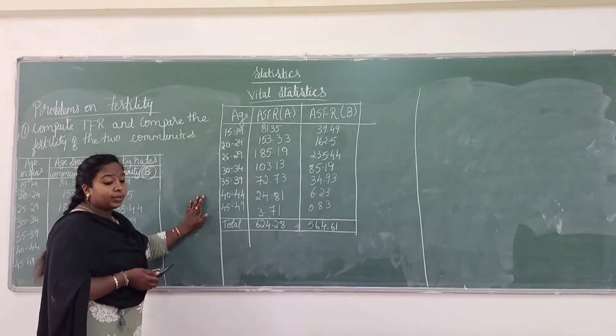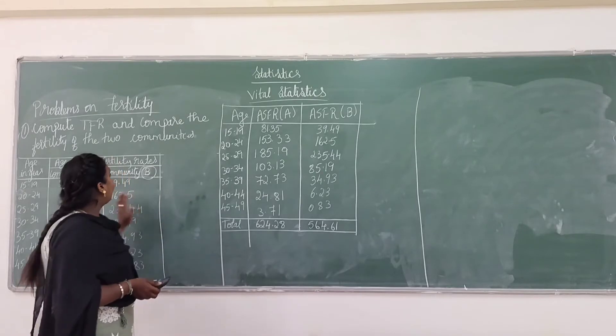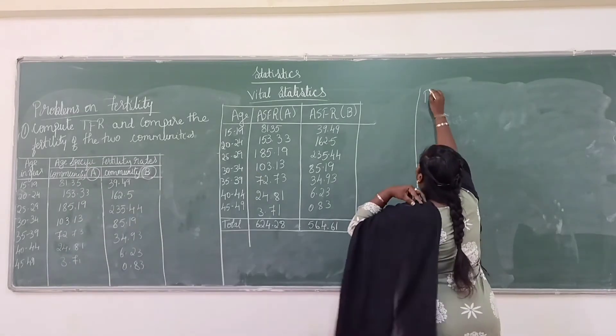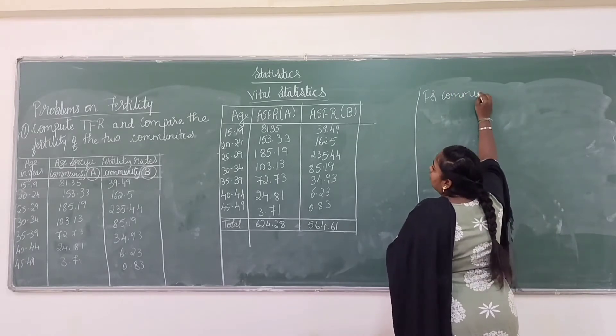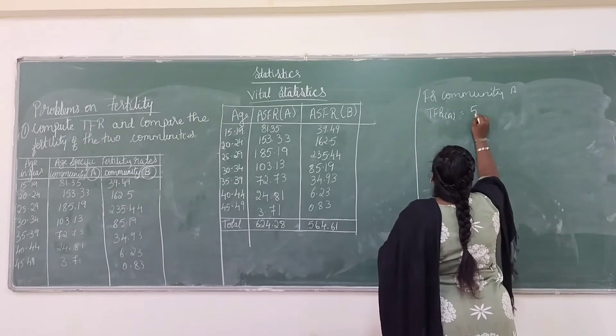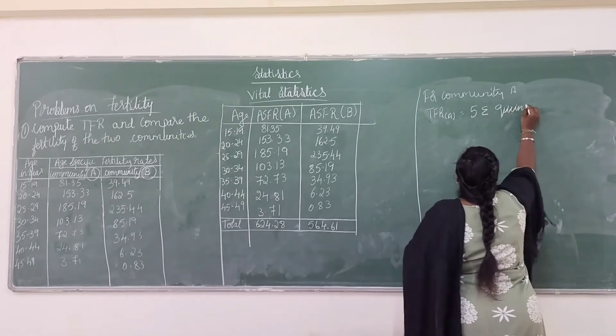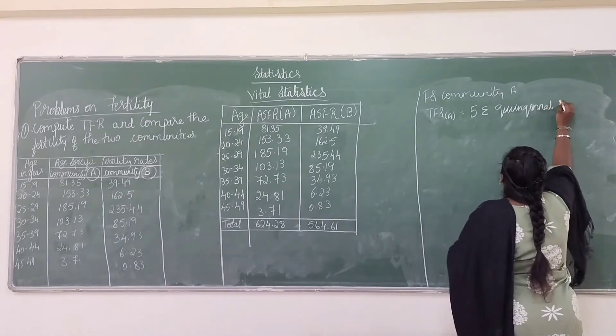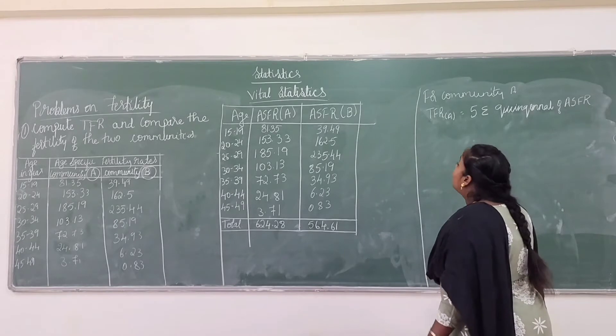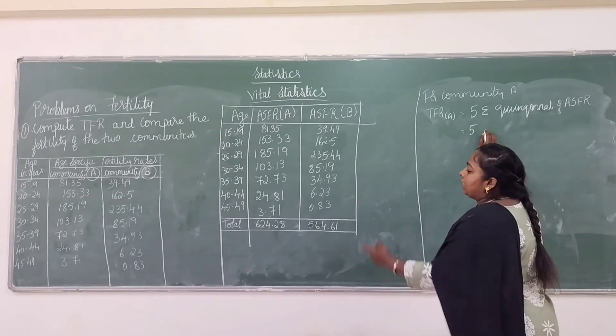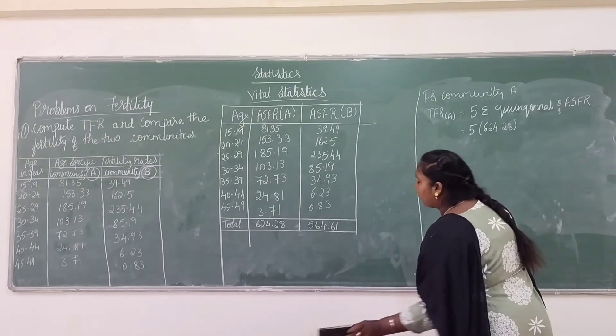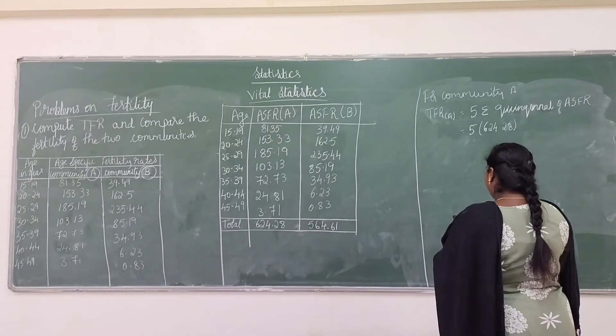Check the totals again. If the total is going wrong, your problems will go wrong. Now, after comparing the two cities, we have the sum of ASFR. TFR is 5 into sigma of ASFR. So 5 into 624.28, I will get TFR of A is 3121.4.